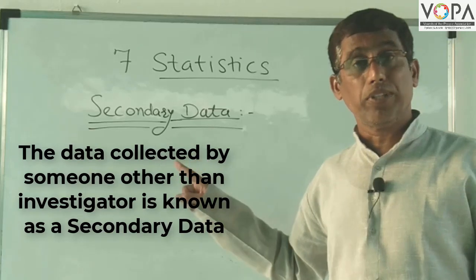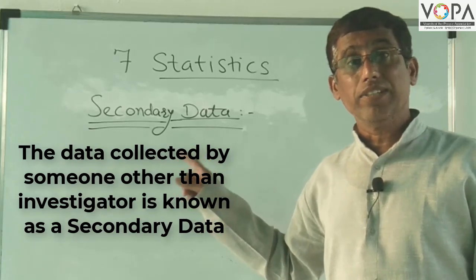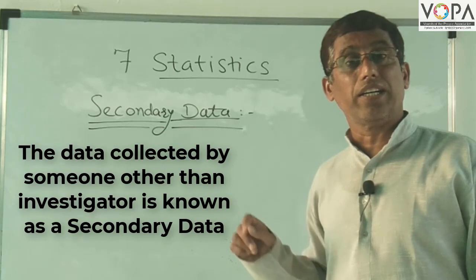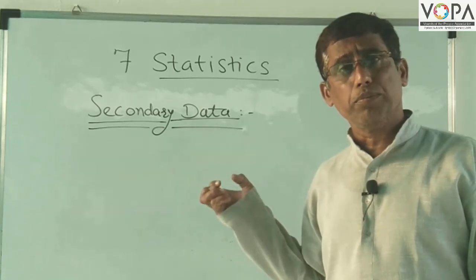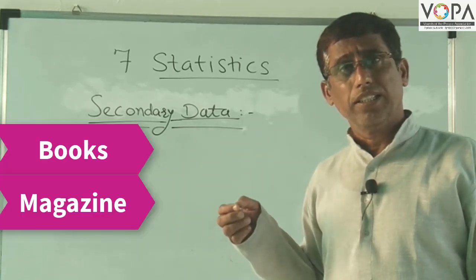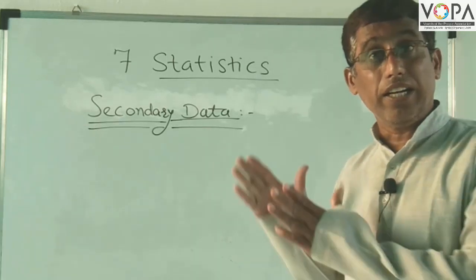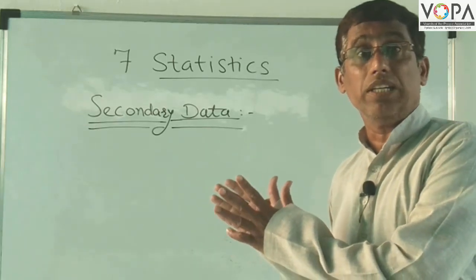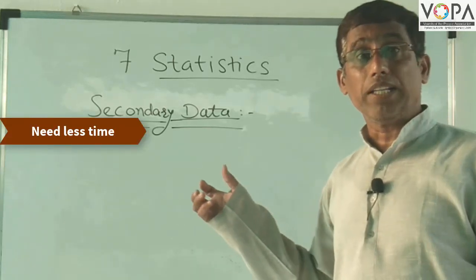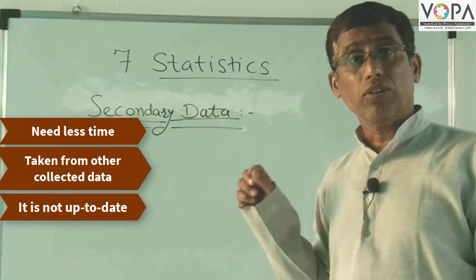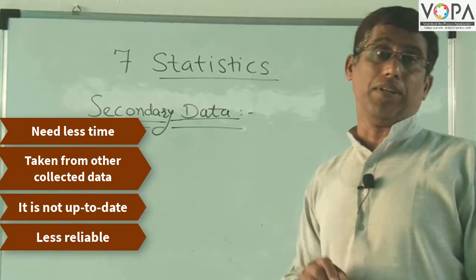Secondary data is data collected by someone other than the investigator. It is obtained from books, magazines, internet, etc. It is readily available so needs less time, but is taken from other collected data, is not up-to-date, and may be less reliable.